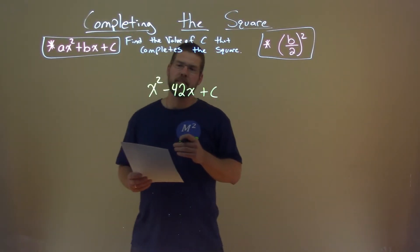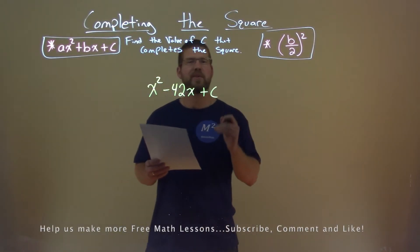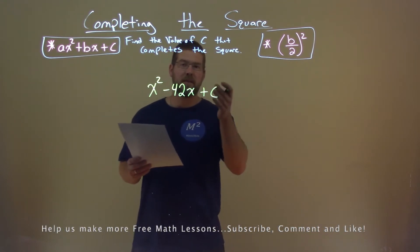We're given this problem right here: x squared minus 42x plus c, and we want to find the value of c that completes the square.